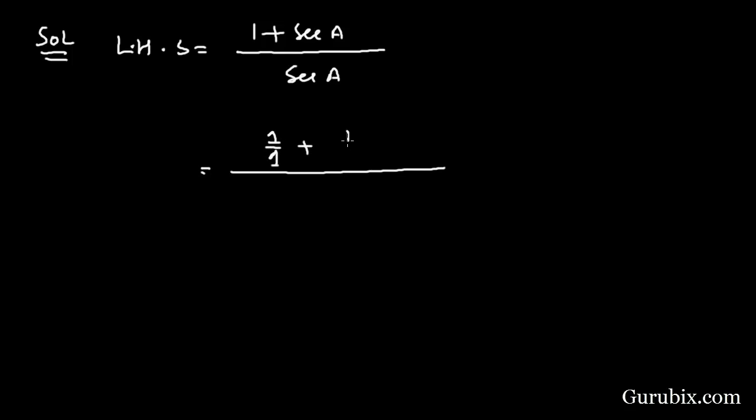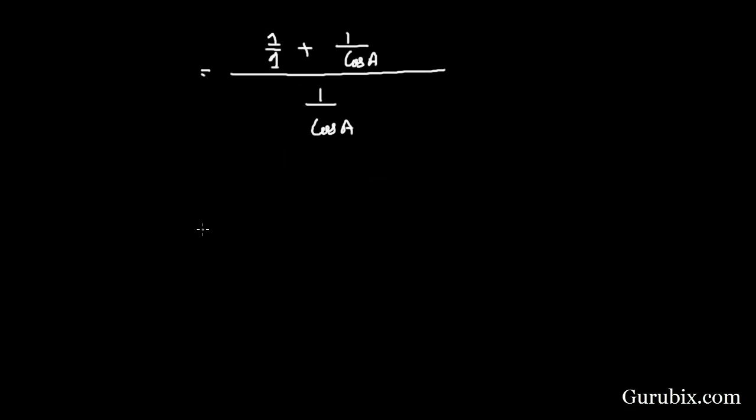(1 + 1/cos A). This is 1 over cos A. We shall take LCM in the numerator, then we have cos A. This equals (1 + cos A), and here we have 1 over cos A.